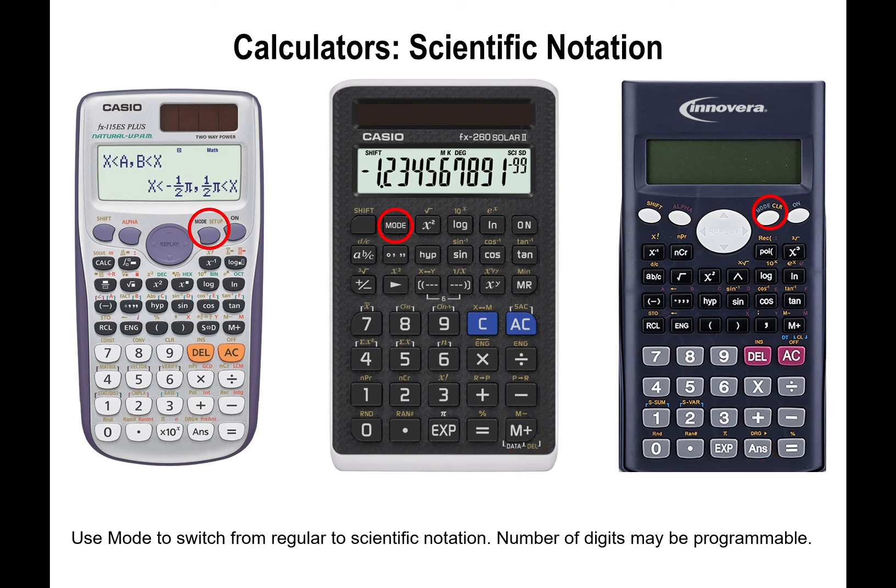The other button you need to be aware of is the MODE button. The MODE button will allow you to switch from regular notation to scientific notation. Instead of having like 1,361,000, you could write this in scientific notation, which would be 1.23 times 10 to the 6. In some cases, you'll probably want to have the mode in scientific notation, so get familiar with MODE to change your calculator from regular notation to scientific notation.